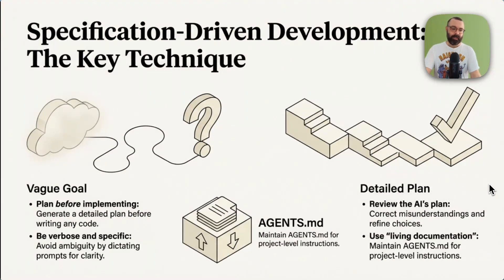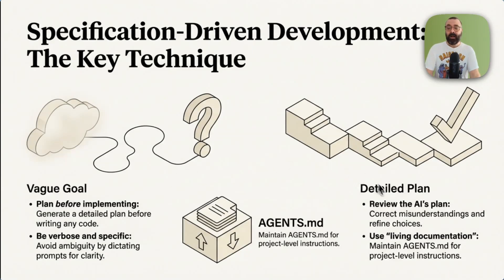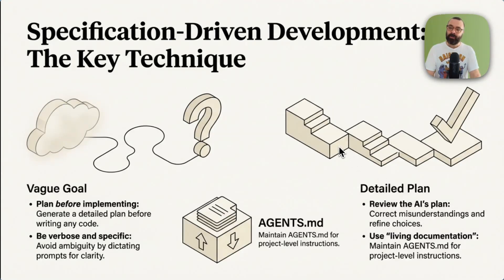So what are we doing here? We're doing specification-driven development. Plan before implementing — generate a detailed plan before writing any code. Be verbose and specific. After you write the plan with the AI, review it, correct misunderstandings and refine choices, and use an agents.markdown file for project-level instructions and have it as living documentation. Check out the repository as well.